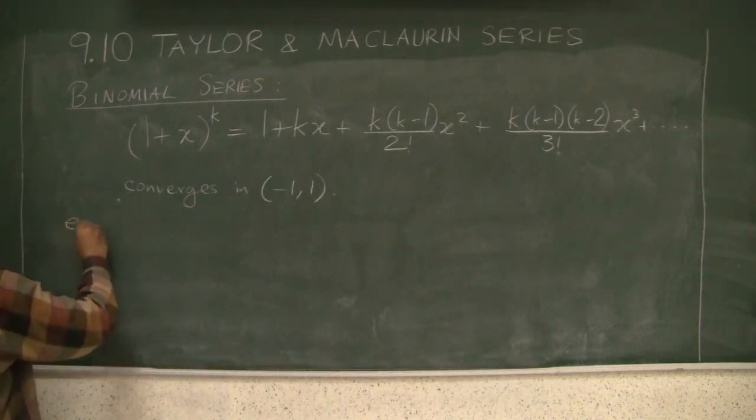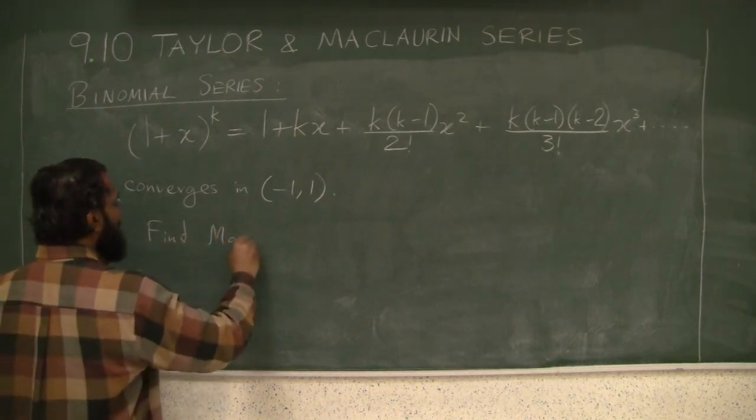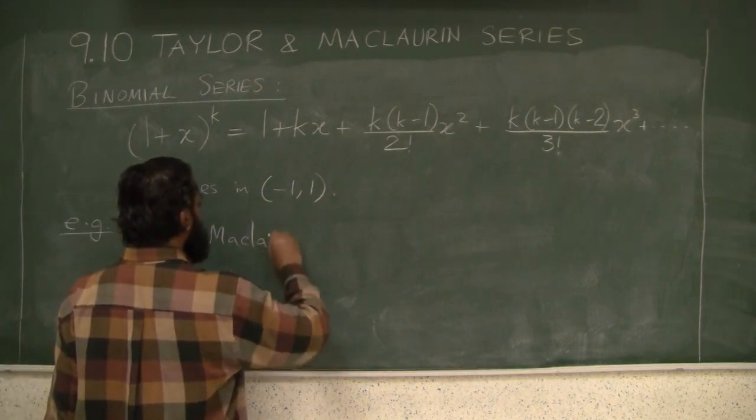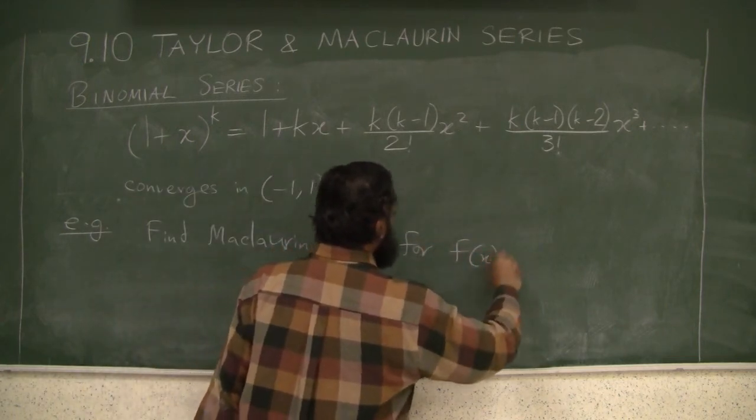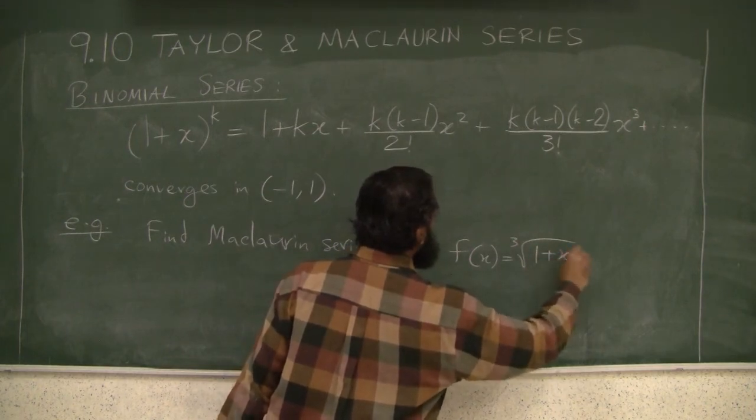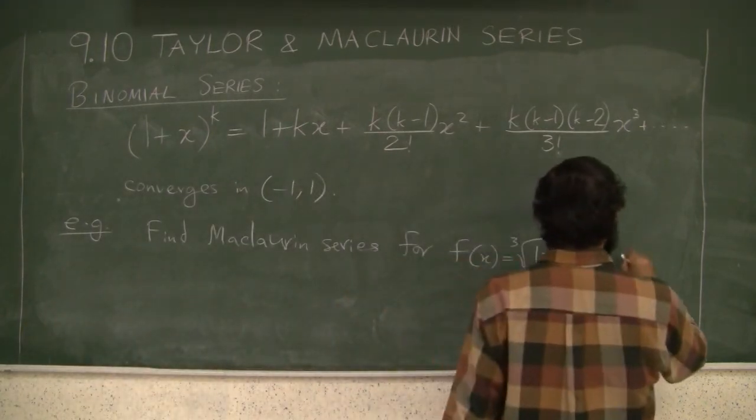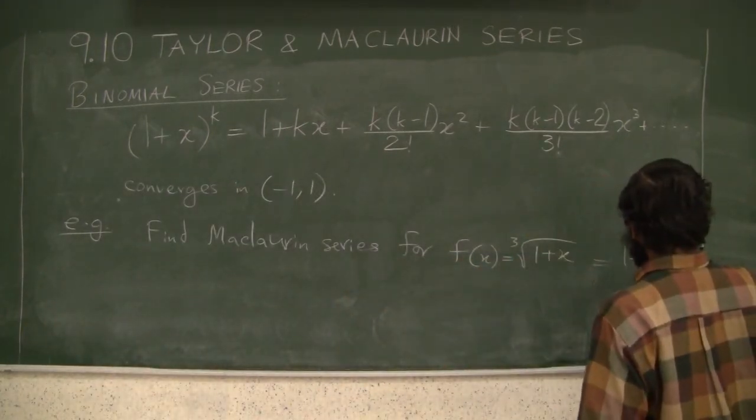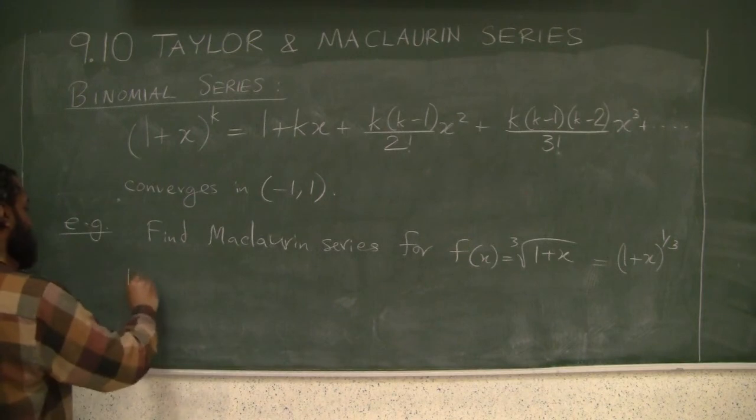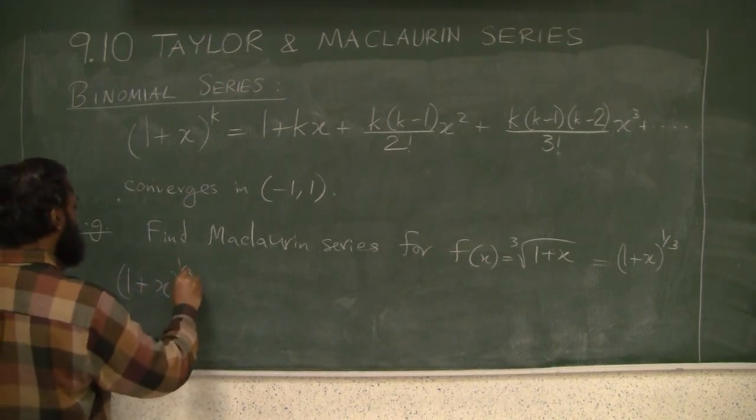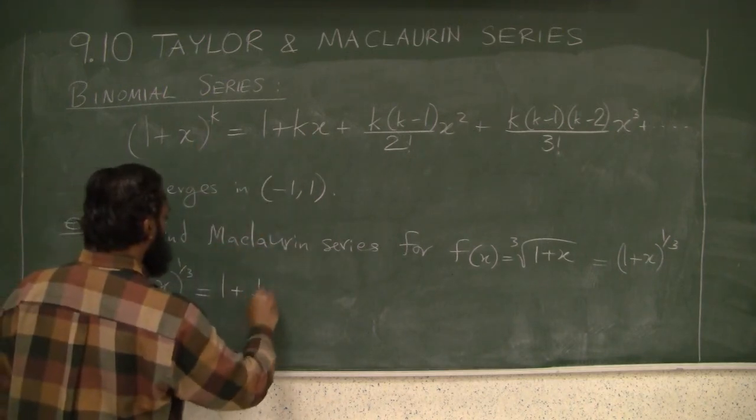Example: Find the Maclaurin series for f(x) equals the cube root of (1+x). You can write it as (1+x) to the power 1/3. By using this result, we get (1+x) to the power 1/3 equals 1 plus k times x, where k is 1/3, so 1/3 times x.